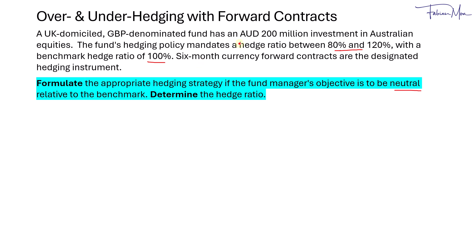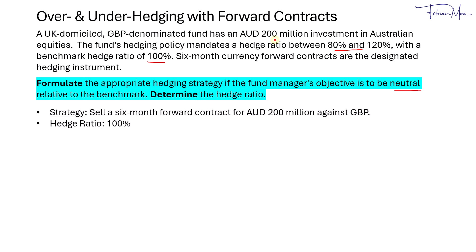If you have an investment in Australian equities, that means you have a long position in Australian dollars. So to hedge, you would have to take a short position in Australian dollars. Using forward contracts, the strategy is to sell or short a six month forward contract for 200 million Australian dollars against pound. Because you want to be neutral relative to the benchmark, we maintain a hedge ratio of 100%.